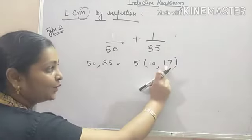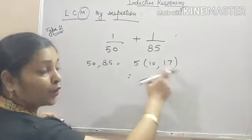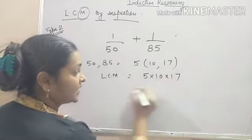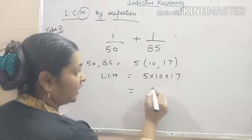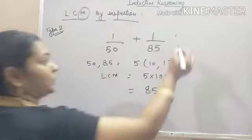Now, 17 is a prime number and you know whenever you get prime number, it will be just the product of the number. So, LCM will be 5 into 10 into 17. That will be 17, 5 is the 85, 8, 50. It will be 850.